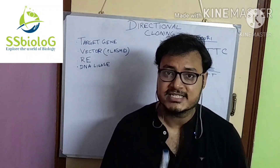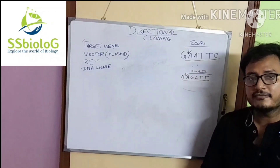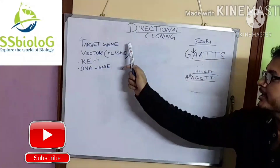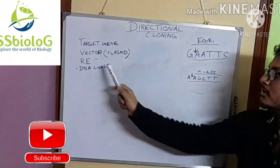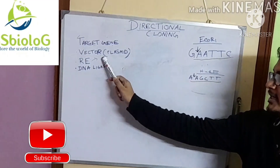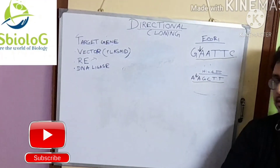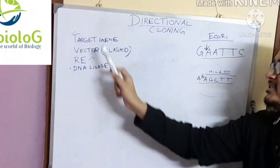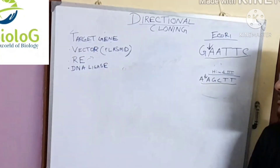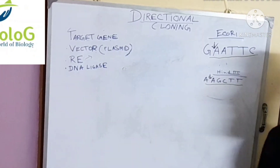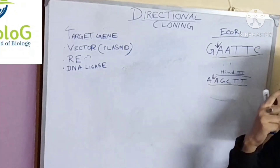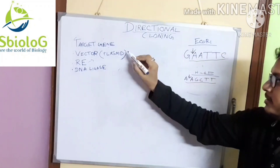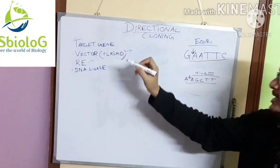To perform directional cloning we need a target gene that is to be cloned, and the second one we need is a plasmid vector. We also need the restriction enzyme that will cut the target gene as well as the plasmid, and the last one is DNA ligase that will seal those cuts.